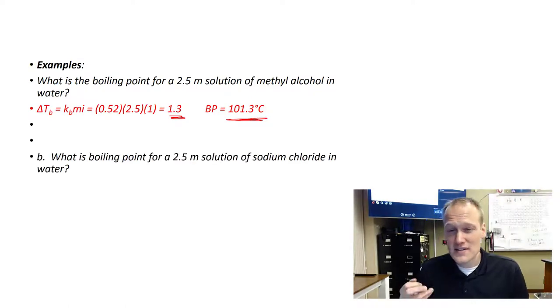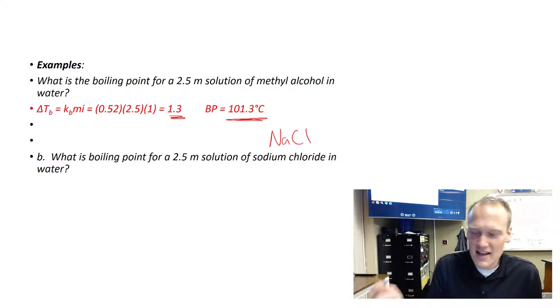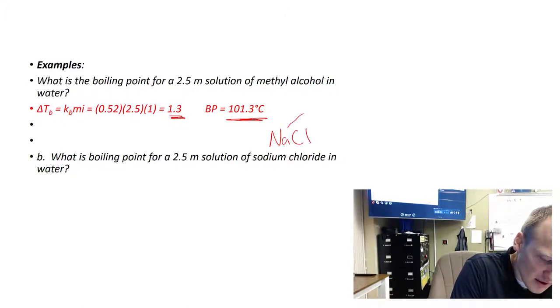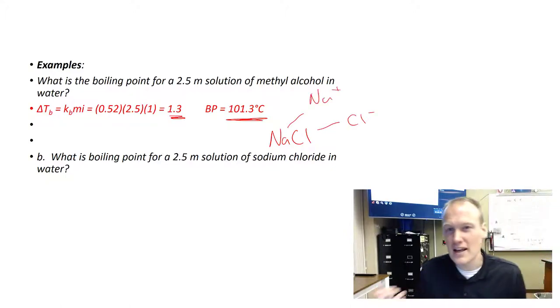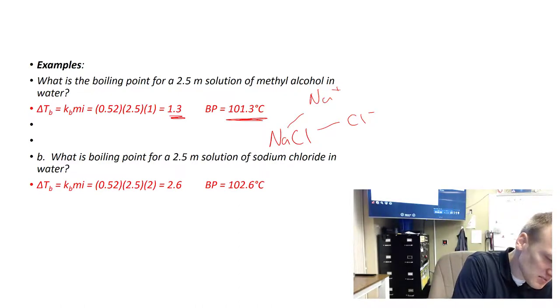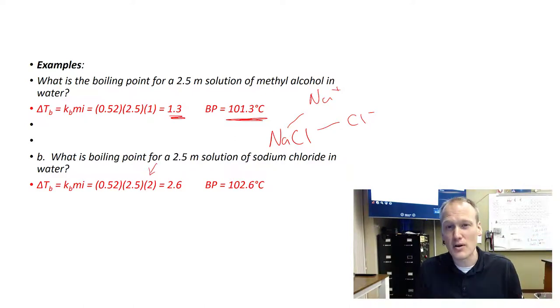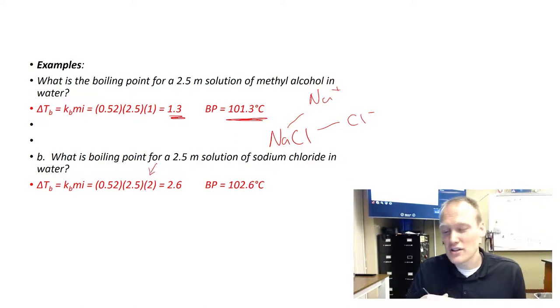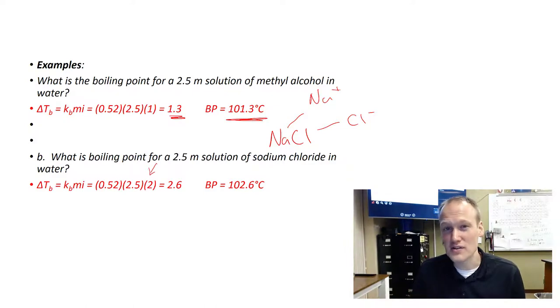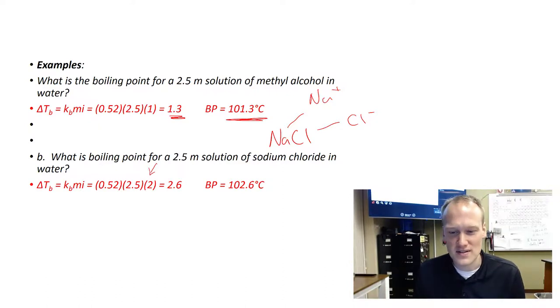Here's another example that's very similar, but notice in this case we have sodium chloride, NaCl. When this substance is dissolved, it's going to dissociate into the sodium cation and the chlorine anion, so that's two particles. The equation is the exact same but instead of a 1 in this position we now have a 2 because we have the sodium and chlorine for every particle that dissolves. Notice that it changes the boiling point elevation by a factor of two, raising the boiling point 2.6 degrees Celsius.